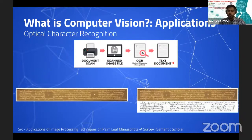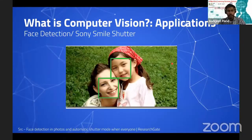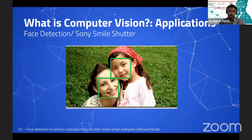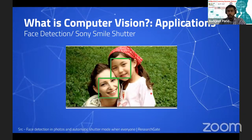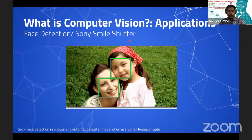Face detection is something most of you have seen in mobile phone cameras — Sony was one of the first to introduce it. It identifies the bounding box of a face, and once you know that region is a face, you can apply post-processing algorithms like blemish removal or wrinkle removal that are focused specifically on the face. Sony also developed the Smile Shutter feature — keep your selfie camera on, give a nice smile, and it clicks the photo, ensuring your photos always capture your best smile.